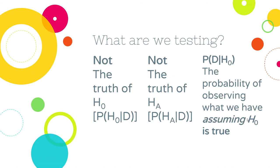What are we really testing? With these classical methods, we cannot test directly the truth of the hypotheses. You are not proving the null; you are not proving the alternate. We are not testing what is the probability of the null hypothesis given the data — that is not what our math allows us to test. We are also not testing what is the probability of the alternate hypothesis given the data. Rather, we are testing: what is the probability of obtaining the data we have obtained assuming the null is true? The null is the assumption — it is where we always start.